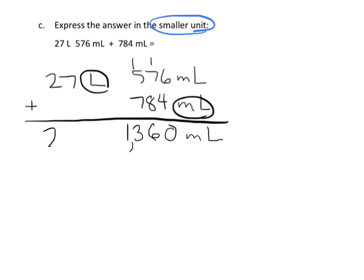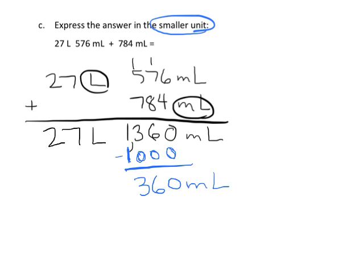We can simplify this because a thousand milliliters equals a liter. If we subtract out a thousand milliliters we end up with three hundred sixty milliliters left over, and that thousand milliliters becomes an additional liter over here — so we end up with twenty-eight liters and three hundred sixty milliliters.